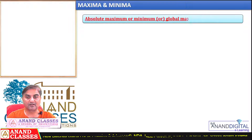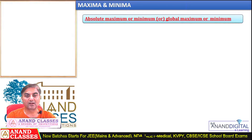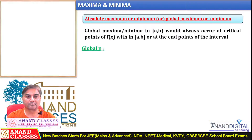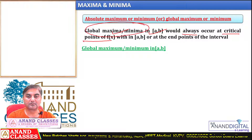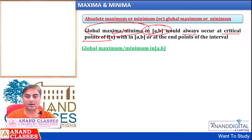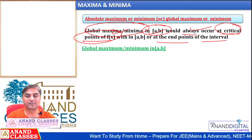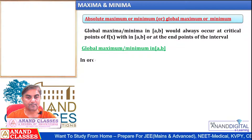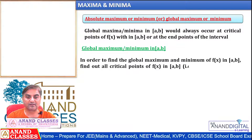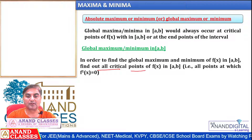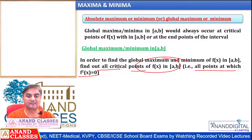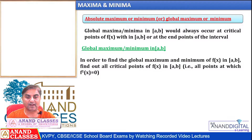It is not necessary that if a derivative exists, the function will have maximum or minimum. Now, for finding absolute maximum and minimum, global maxima and minima in a given interval [a, b] will always occur at critical points of f(x). To find global maximum and minimum value of f(x), find out all critical points — all points at which f'(x) = 0 or f'(x) does not exist.